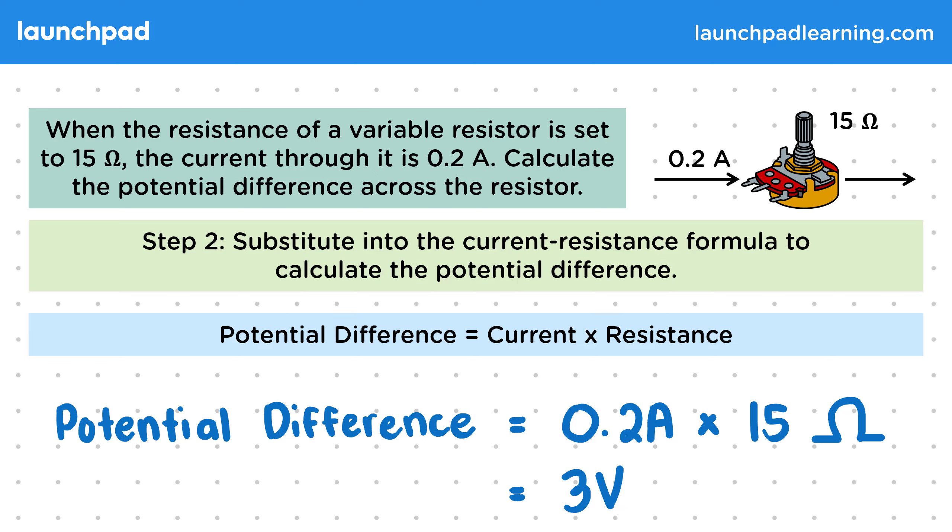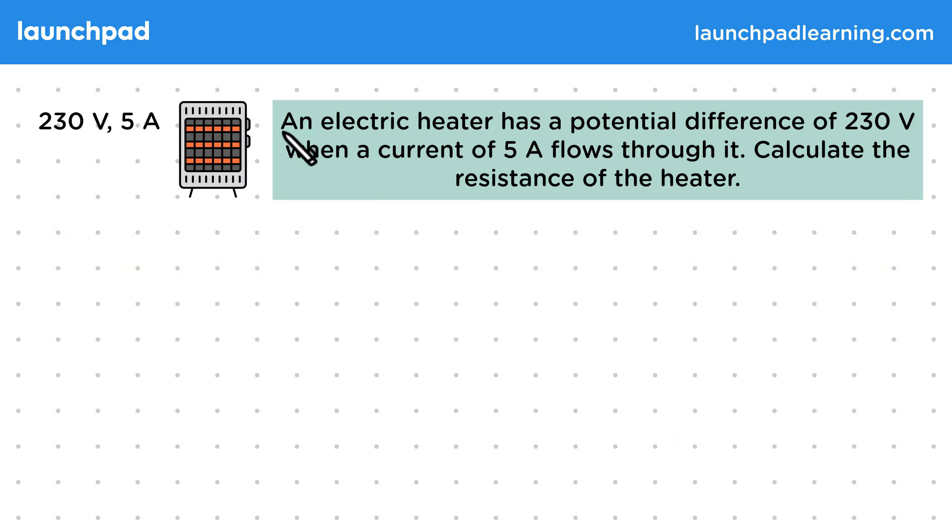Let's have a look at another example. An electric heater has a potential difference of 230 volts when a current of 5 amps flows through it. Calculate the resistance of the heater.